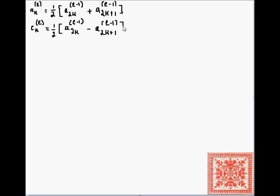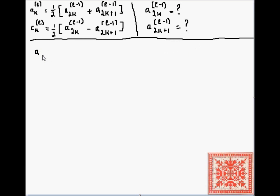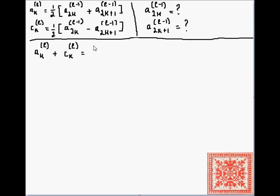We compute the difference and divide by two. Now, to go in the reverse direction, we have to compute the value of a_(2k) at level l minus one, and then the value a_(2k+1) at level l minus one — essentially going from the current level to the previous. We derive these by simply adding the two above equations column by column.